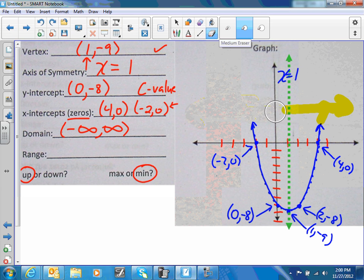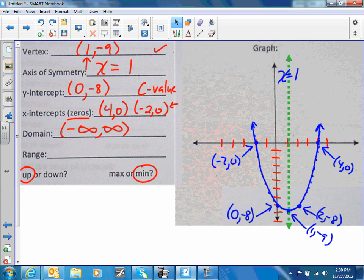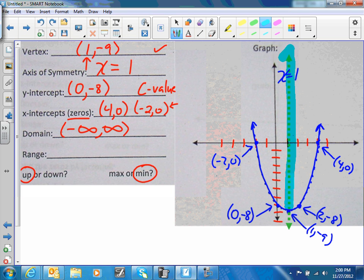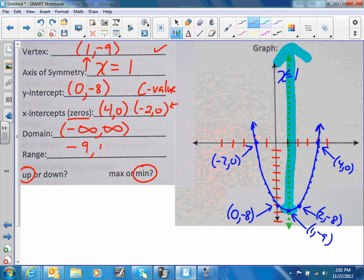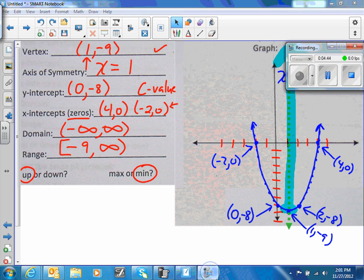And then your range. Your range goes from top to bottom. If this is your lowest point, it's going to start there and go up. Your lowest point is at -9, and it's going to go all the way up to infinity. That -9 is included, and that's how you will graph this problem.